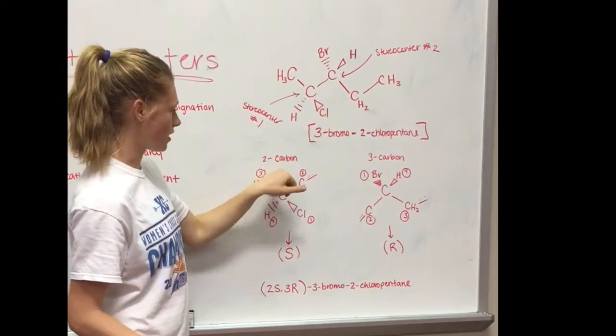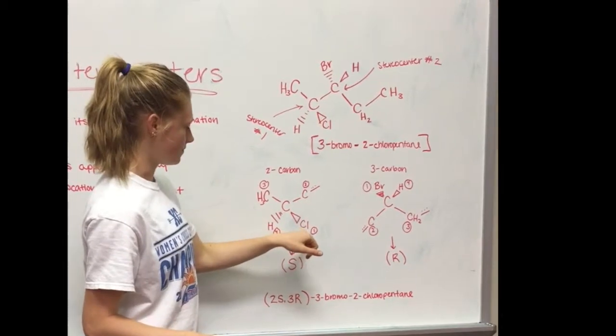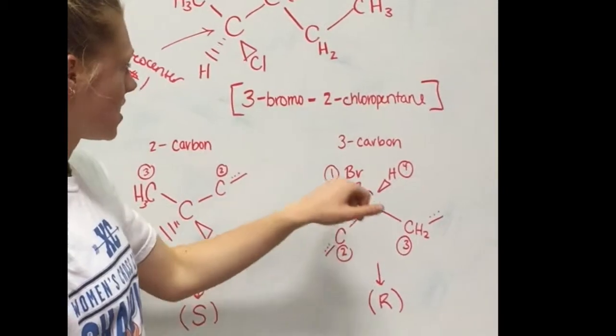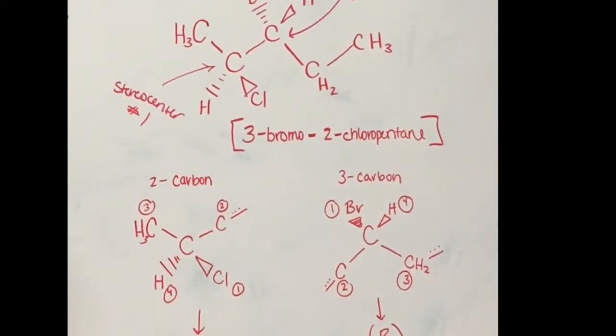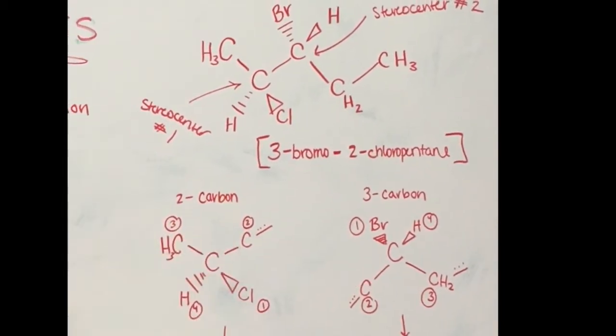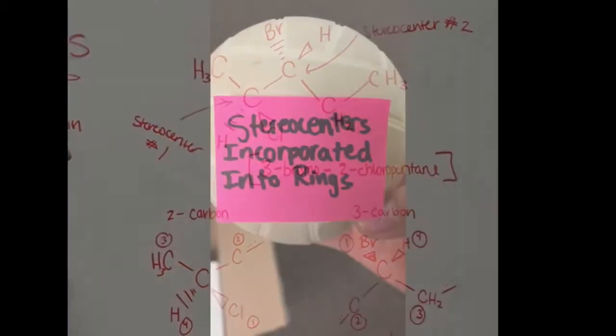Then on the number two carbon, using the rules for priorities, you know that it's an S configuration, and the number three carbon has an R. So when naming it, you would put in parentheses 2S for the two carbon S and 3R for three carbon R, 3-bromo-2-chloropentane.